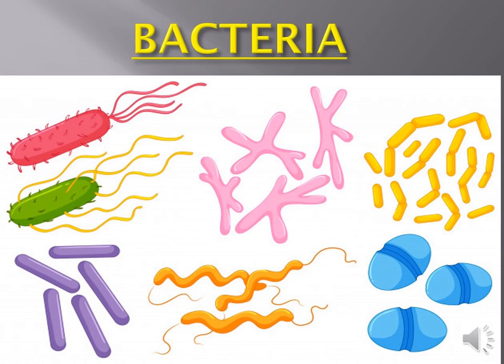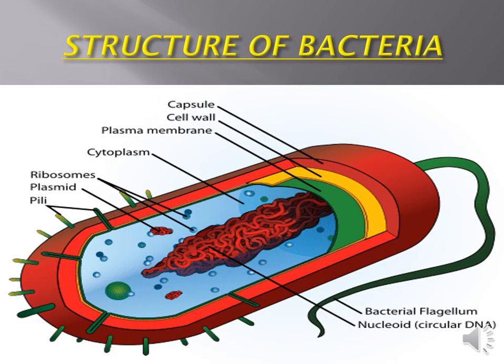Moving on to the cell structure of bacteria. A bacterium has an outer covering known as the cell wall. The nucleus is represented by a nucleoid, without a nuclear membrane. An extra chromosomal DNA or circular DNA is known as a plasmid. Protein synthesis is carried out by 70S ribosomes, not 80S — 80S is only in eukaryotic cells. Other cellular organelles such as mitochondria, Golgi body, and endoplasmic reticulum are absent in bacteria. Flagella assist in locomotion, which is the movement of the organism.